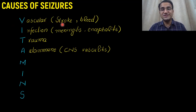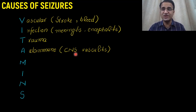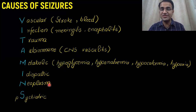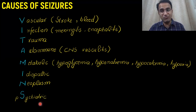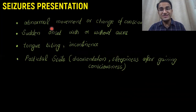V for vascular causes like stroke and bleed, I for infection such as meningitis and encephalitis, T for trauma, A for autoimmune like CNS vasculitis. M for metabolic causes: hypoglycemia, hyponatremia, hypocalcemia, hypoxia. I for idiopathic, N for neoplasm, and even psychiatric issues like conversion disorder where a patient can present with pseudo-seizures.